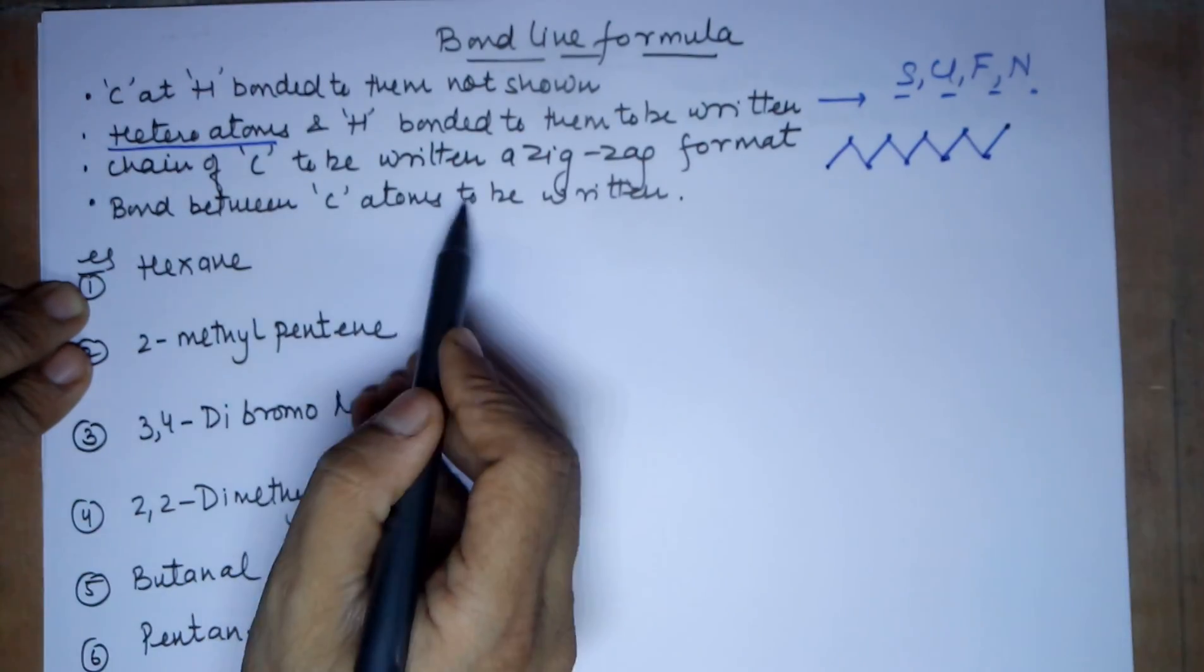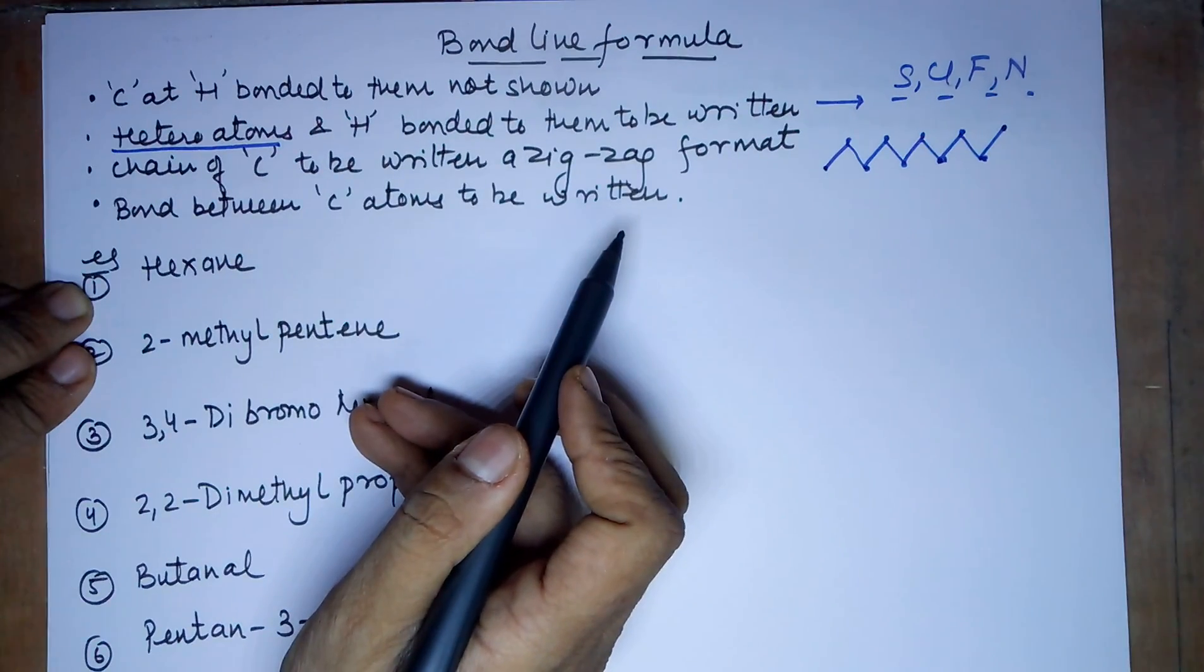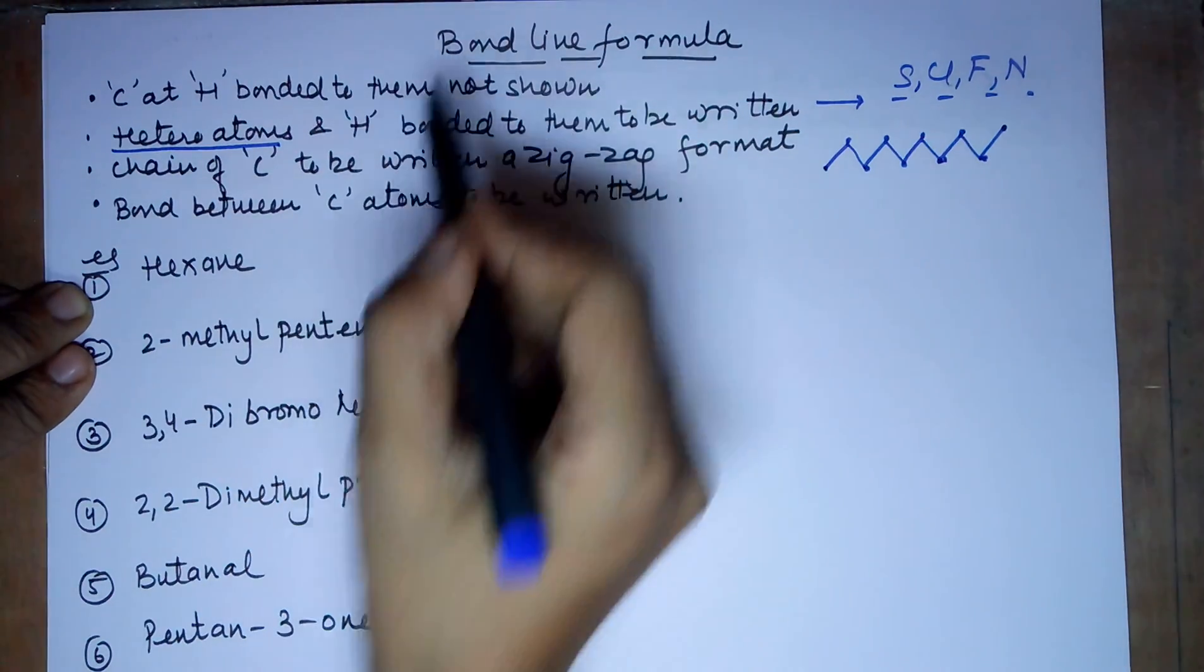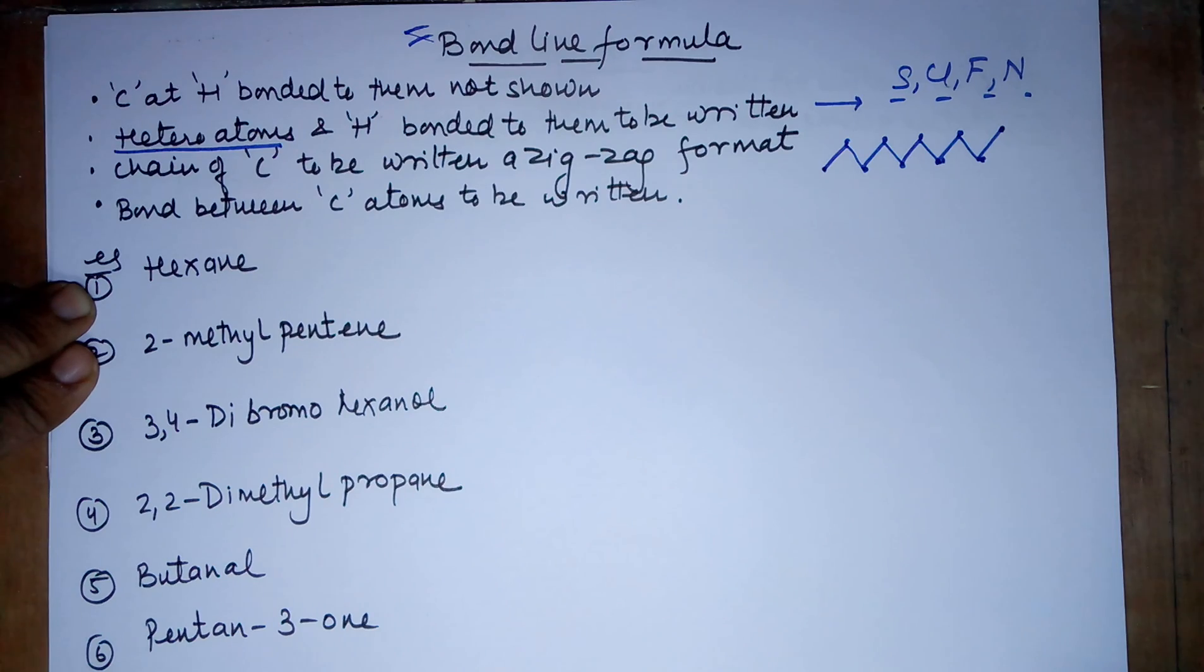The bonds between the carbon atoms need to be written, these bonds are to be mentioned. That is why the formula is bond line formula. To illustrate this, I will be taking 6 examples.